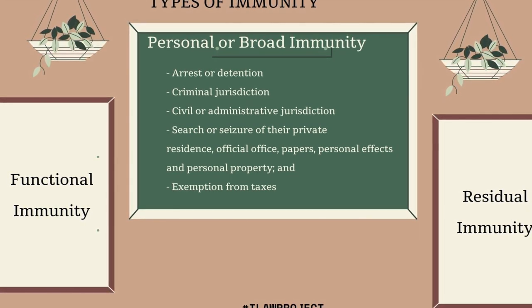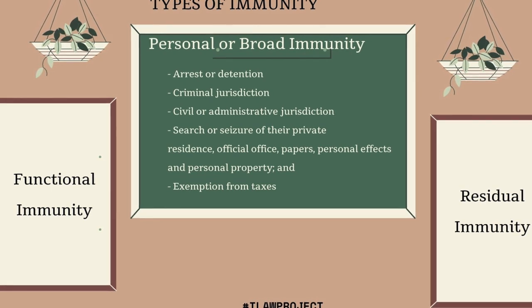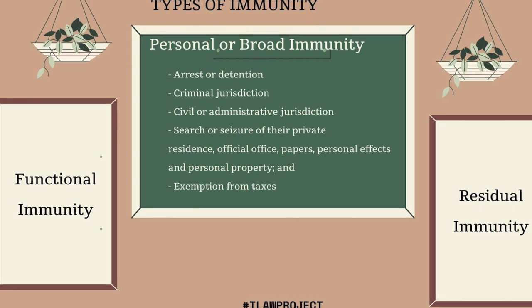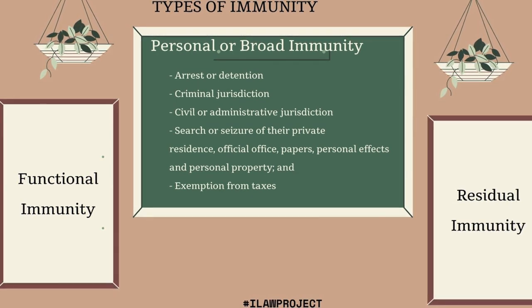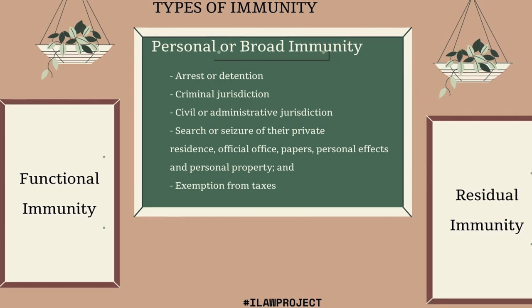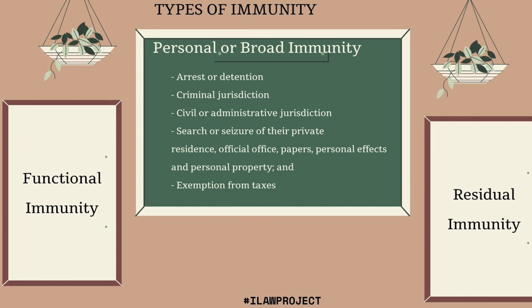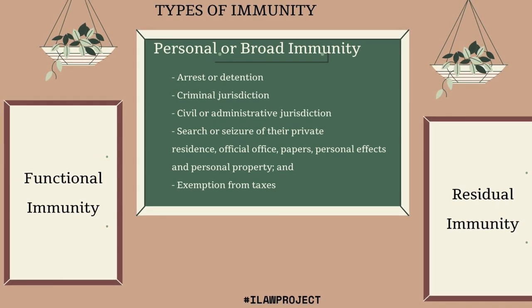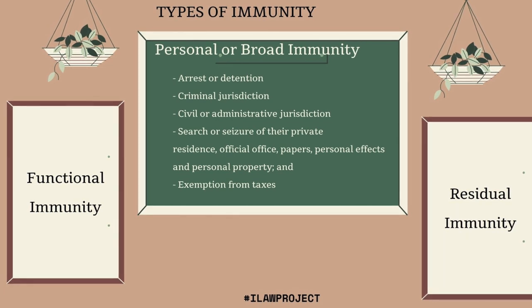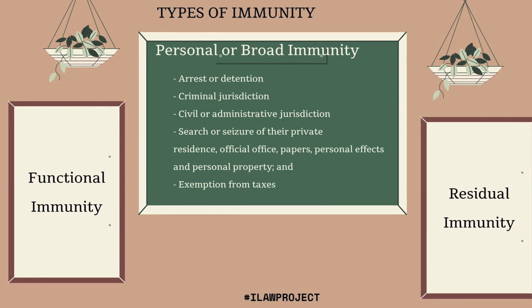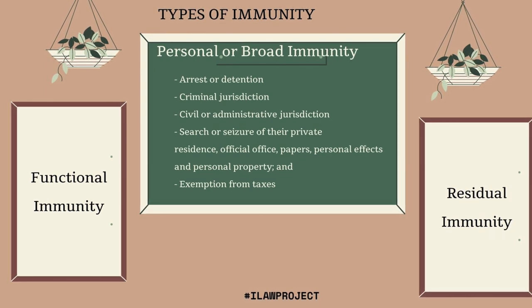Personal immunity includes immunity from arrest or detention, from criminal jurisdiction of the receiving state, from civil or administrative jurisdiction of the receiving state, and from search or seizure of their private residence, official premises, office, papers, personal effects, and personal property. They also enjoy exemption from taxes. The other type of immunity is referred to as functional immunity — a somewhat restricted immunity type. It only grants immunity for acts or conduct carried out in the course of duty, and does not extend to anything outside the duties of the individual who enjoys the immunity.